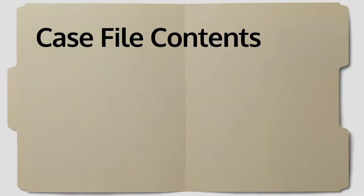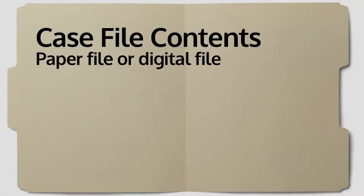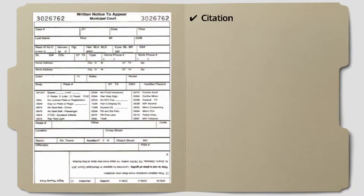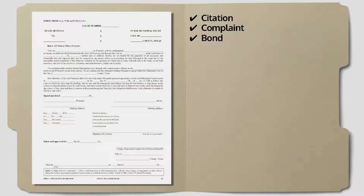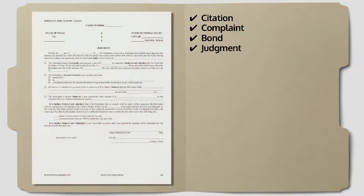Let's start by defining the case file. I am referring to the actual paper file or digital file that contains the documents in the case. Among the items in this file would be the citation, the appearance notice, the bond filed if one was applicable, and the judgment, which should contain the written plea entered by the defendant and the court's finding, signed by the judge.